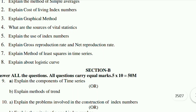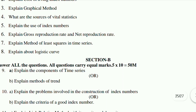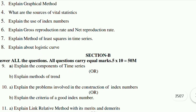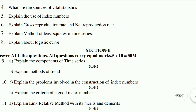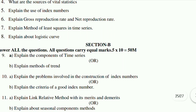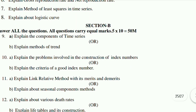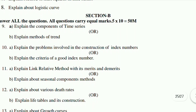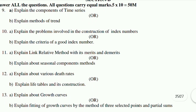Essay questions: Ninth A, explain the components of time series. Ninth B, explain methods of trend. Tenth A, explain the problems involved in the construction of index numbers. Tenth B, explain the criteria of a good index number. Eleventh A, explain the link relative method with merits and demerits. Eleventh B, explain seasonal component methods. Twelfth A, explain about various death rates. Twelfth B, explain life tables and their construction. Thirteenth A, explain about growth curves. Thirteenth B, explain fitting of growth curves by the method of three selected points and partial sums.